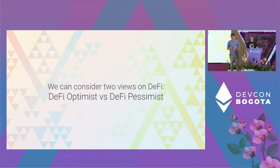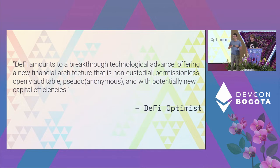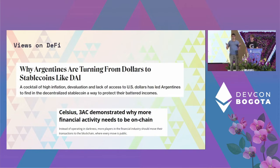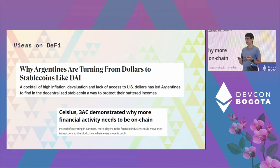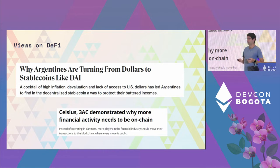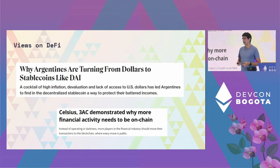With DeFi there's been a lot of controversy, and we can see this as two very different points of view — optimistic and pessimistic. For the DeFi optimist, DeFi is a huge technological advance: a new financial system that's openly auditable with all those properties, and very promising for the future. There have already been many good things with DeFi — for example, stablecoins like DAI have been used in countries like Argentina to fight inflation.